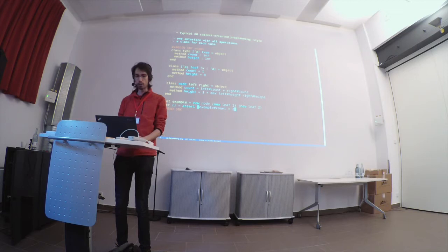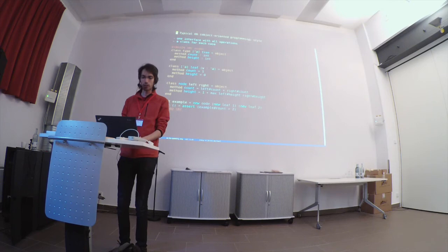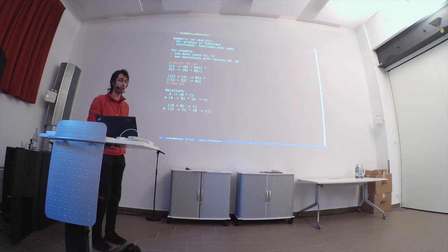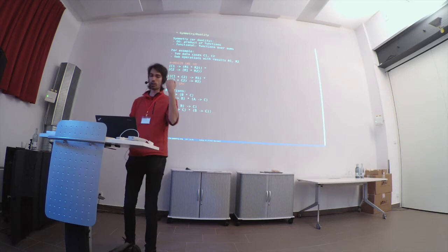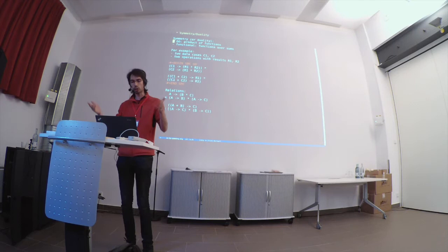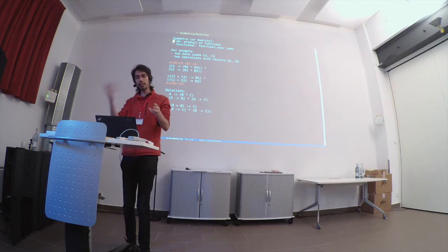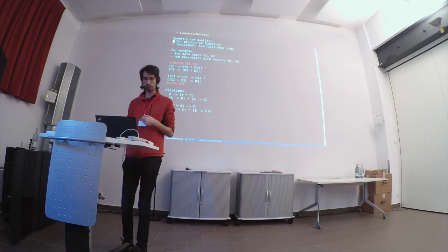The two styles look different but are similar in some ways. One way to make this precise is to say there is a symmetry — some call it a duality. Programming language researchers would say the object-oriented organization is a product of functions: an object is like a tuple or record of functions, where you have a 'this and a that.' The functional programming organization is functions over sums, where sums describe data that is 'something or something else.' They are dual in a certain sense.